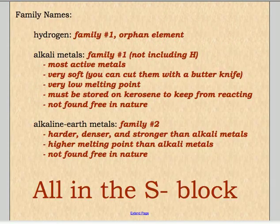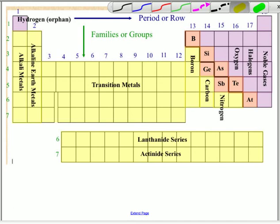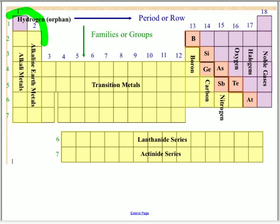The first ones we're going to look at are in the S block. When I'm talking about the S block on the periodic table — let me just get a little highlighter here — this is our S block over here. Anything in these two columns is typically considered the S block.